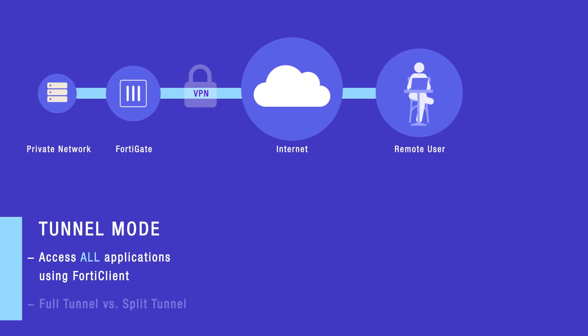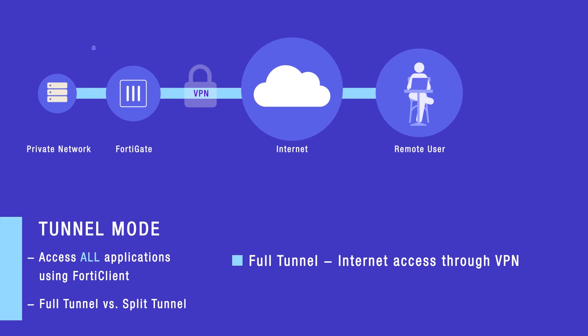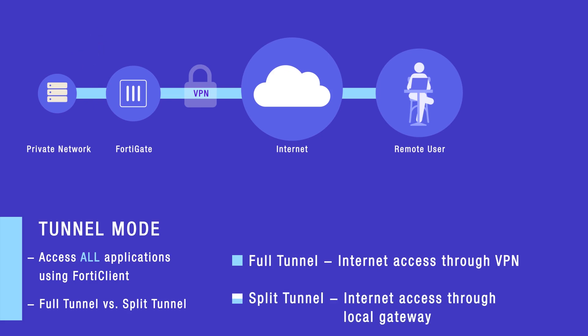SSL VPN tunnel mode can be configured as full tunnel or as split tunnel. In the full tunnel mode scenario, the remote user will access the internet via the secure tunnel using FortiClient. This can cause heavy load on the VPN connection and slow the connection speed. In split tunnel mode, the remote user will access the private network through a secure VPN tunnel using FortiClient, but will still be able to access the internet directly without going through the SSL VPN.